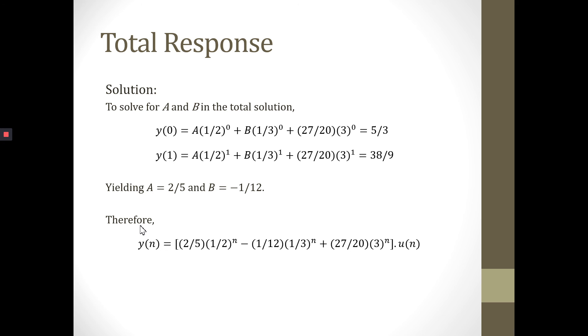Therefore, we can construct our total response. This is from the homogeneous solution and this is from the particular solution. Our total response is this one: this is A, this is B, and this is C multiplied with U(n). U(n) is a step function; for N equal to and larger than 0, it equals 1. Thank you.